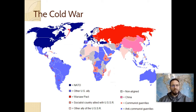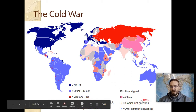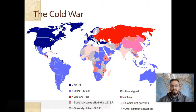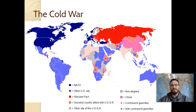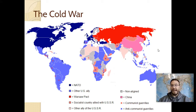Light blue countries tend to be aligned with NATO; light red countries tend to be aligned with the Warsaw Pact. The little Xs on the map represent communist guerrillas — red Xs in blue states mean communist uprisings in those countries, some of which still persist today. Blue Xs in red countries are anti-communist guerrillas or uprisings. Our big focus today is to understand the politics and theories that led to much of what happened during the Cold War and set up a lot of what has happened since.